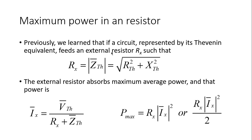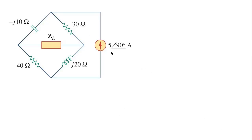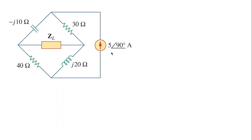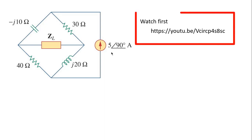This is the exercise: Z_L is to be a resistor. What should be the value of that resistor Z_L such that it absorbs maximum power out of the circuit? I'm going to find the Thevenin equivalent at that port. Before looking at this, please watch the video I mentioned before.